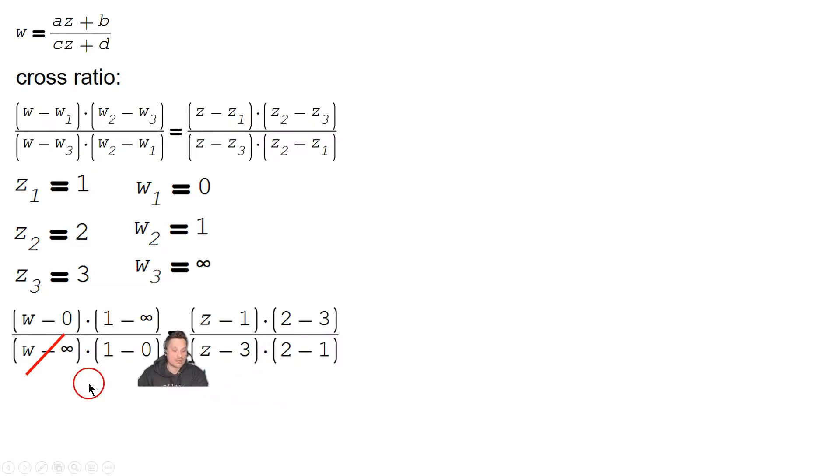At this point, you've got to observe something, that, for example, W minus infinity has to cancel with the 1 minus infinity because they're both, roughly speaking, like negative infinity. So, see, they cancel just about. That's going to give us the following. On the left side, right, if you look here, it's going to be W minus 0, which is W. On the bottom, you have 1 minus 0, which is 1.